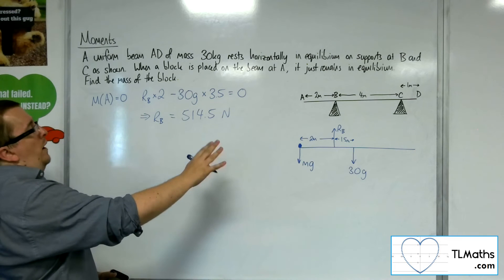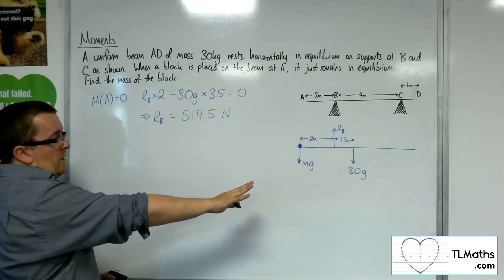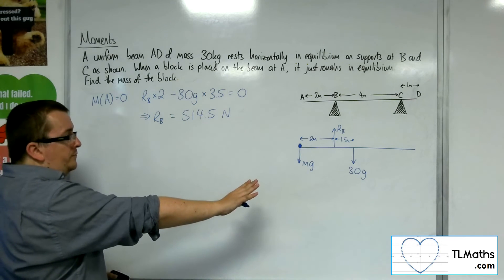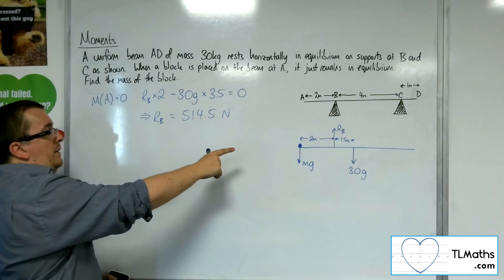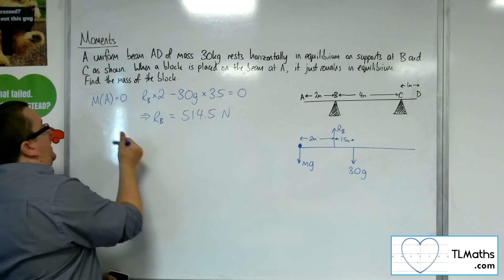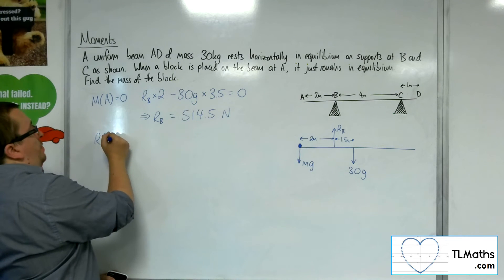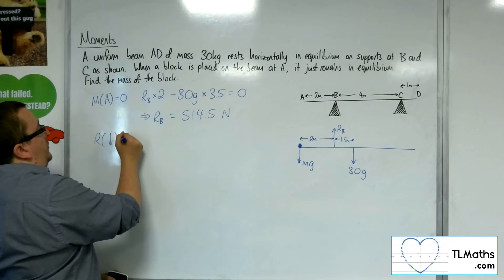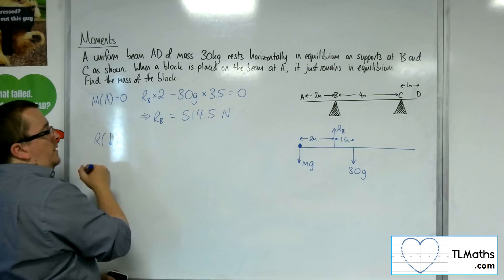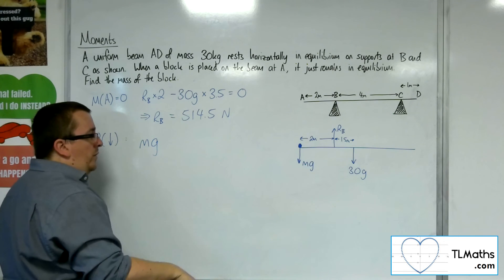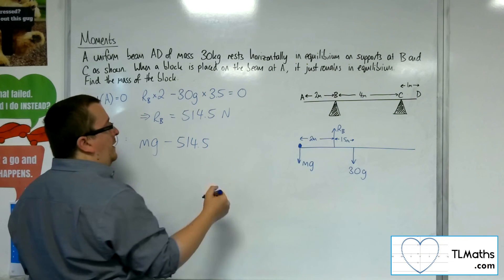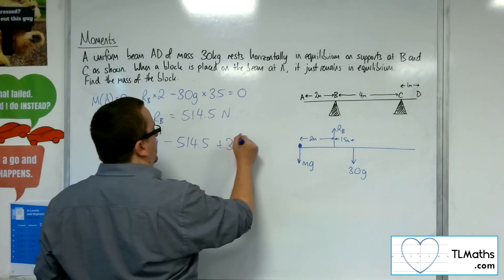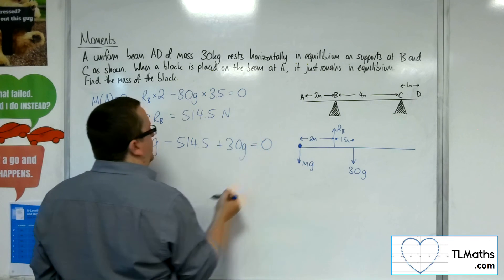Now we're in equilibrium, just, so I can find the resultant force and that will be zero. If I resolve taking downwards as positive, then I've got Mg working downwards, I've got RB working upwards, and I've got 30g working downwards, and that's got to equal zero.